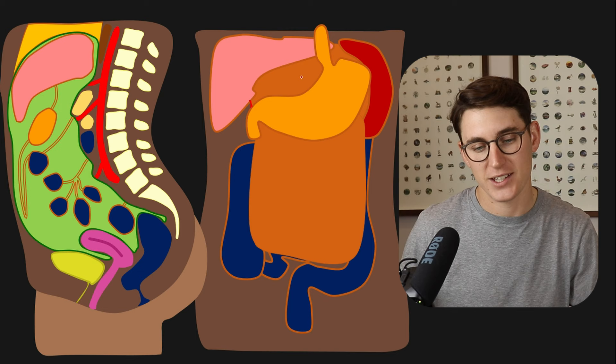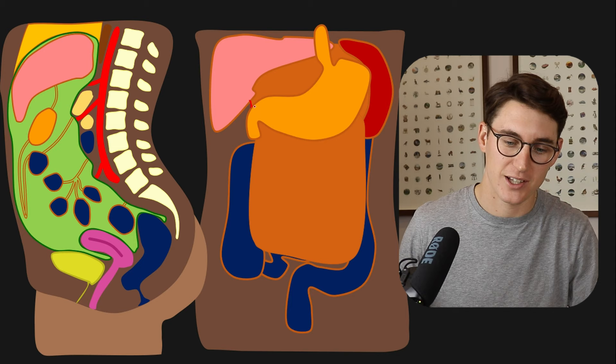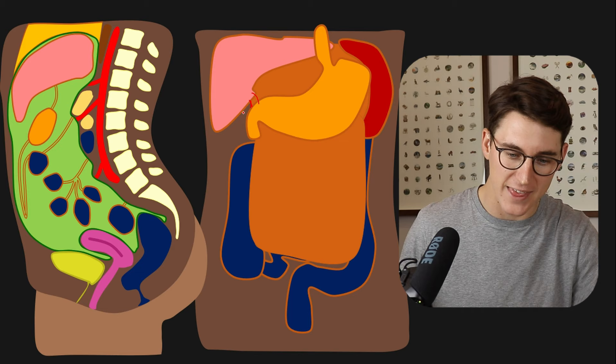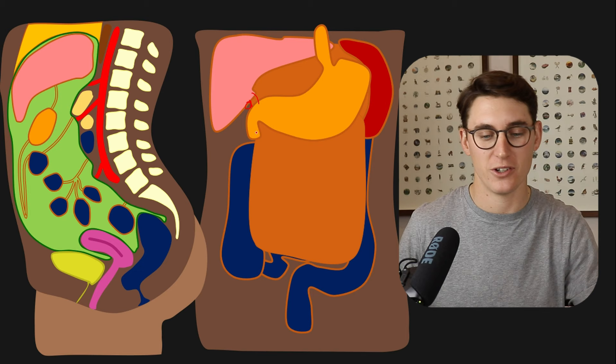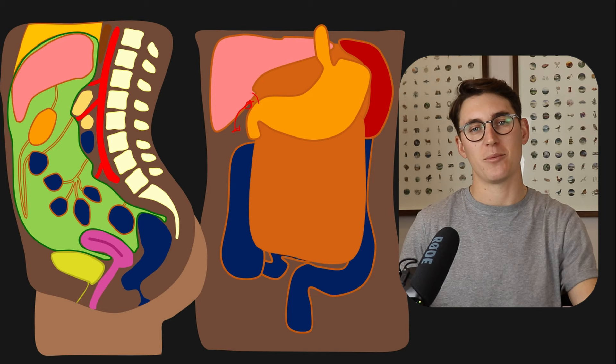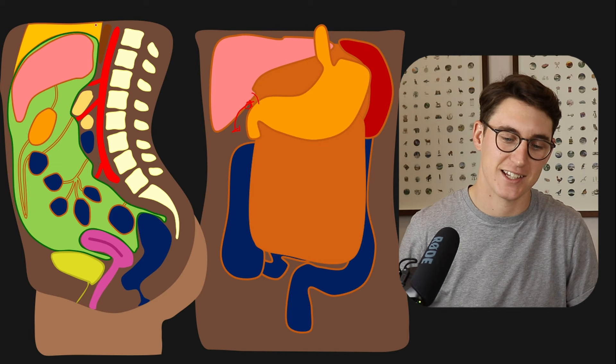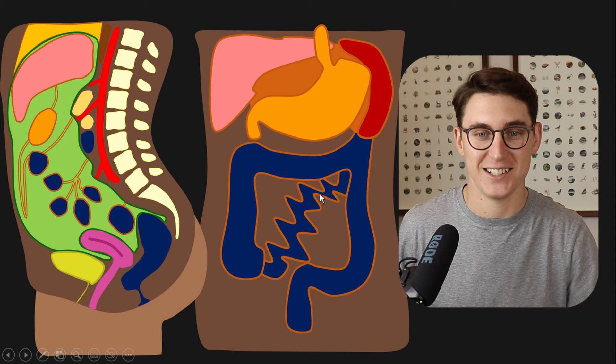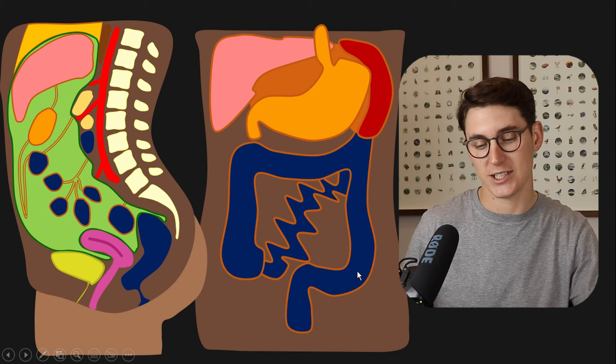The lesser omentum can be called our gastrohepatic as well as our hepatoduodenal ligament. There are really important structures that pass through here: our common bile duct, our hepatic artery, and our portal vein. That opening — the epiploic foramen, or foramen of Winslow — is what connects the lesser sac to the greater sac within the abdomen. They're not two distinct spaces; fluid can track between them through the epiploic foramen. If we take away that apron, we can see our small intestine and our large intestine — ascending, transverse, descending, sigmoid, and rectum.